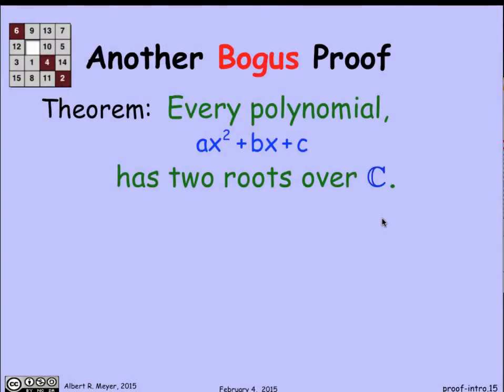There's other kinds of bogus proofs that come up. Let's just run through this one quickly. Here's a fact that you know about roots of polynomials. Every polynomial has two roots, at least over the complex numbers, over C.